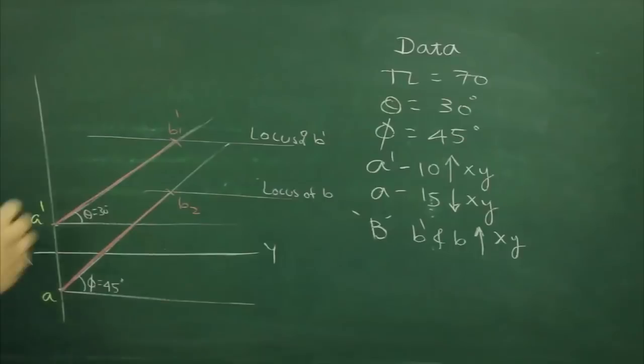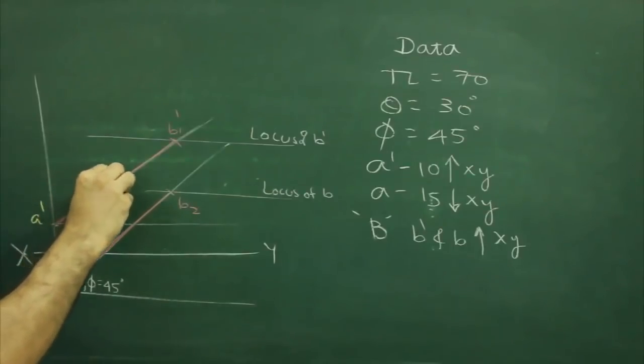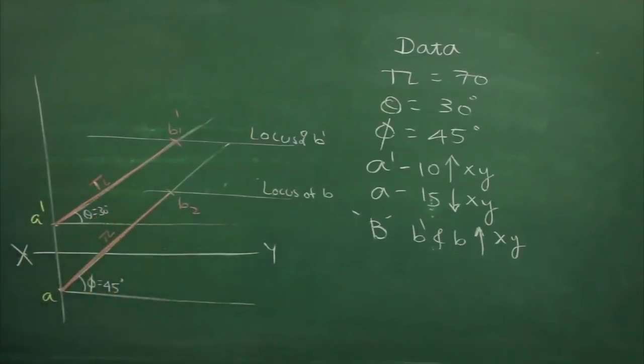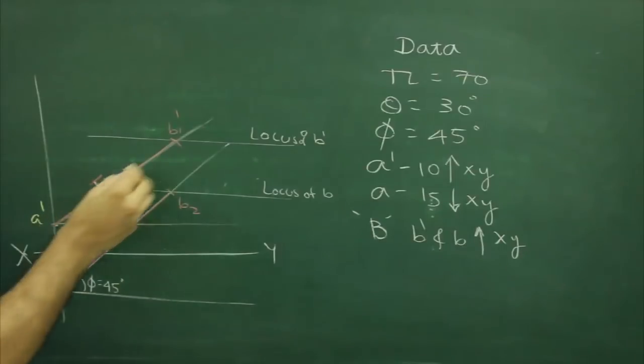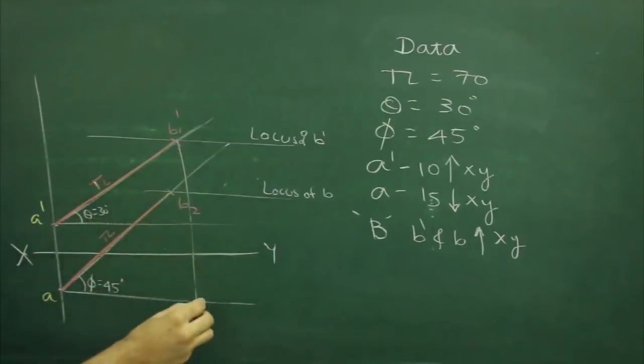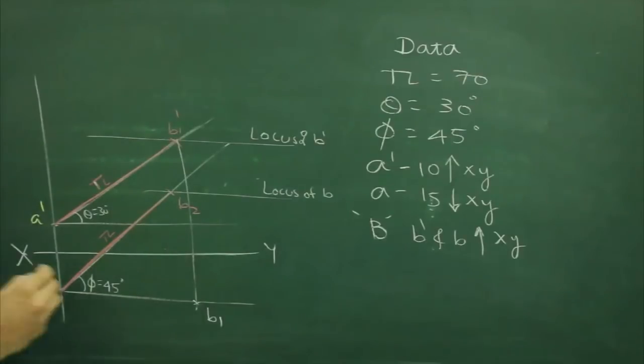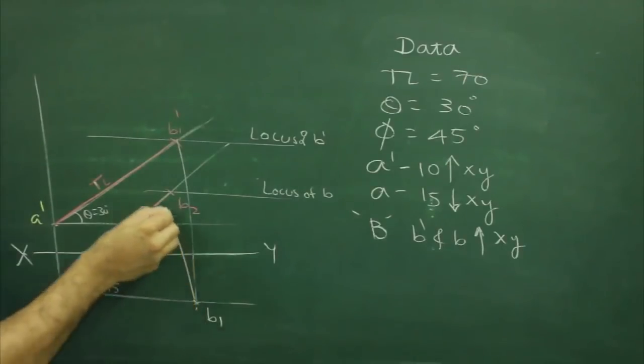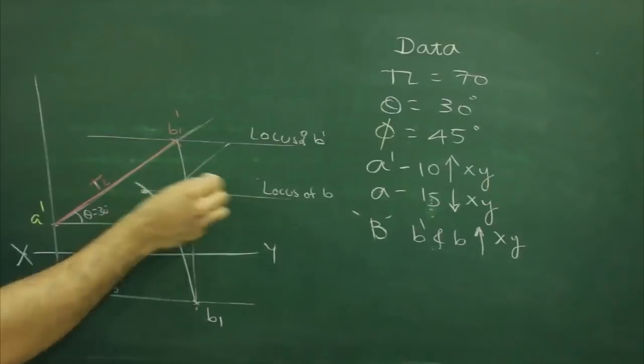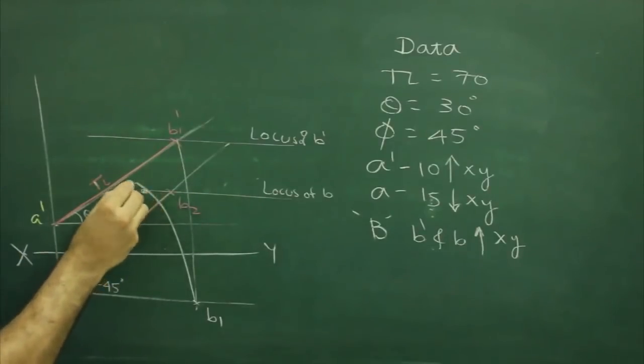Now we have true length. We need to find out front view and top view. What we will do? We will follow the same way. Take b1 dash till a, mark that point as b1 and take a to b1 and rotate. Wherever it will cut with locus of b, that would be your point b.